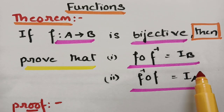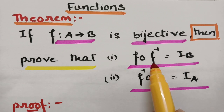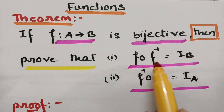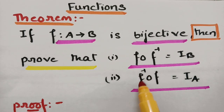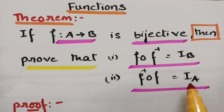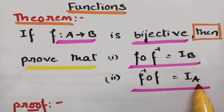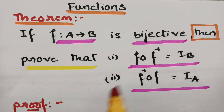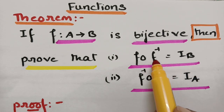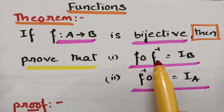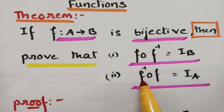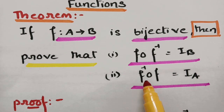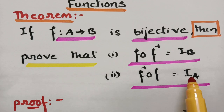How to remember this? f inverse is in the second position, therefore this is IB. f inverse is in the first position, remember that it is IA. A after B — f inverse is in the second place, therefore it is IB. And f inverse is in the first place, it is IA. So that you can remember easily.